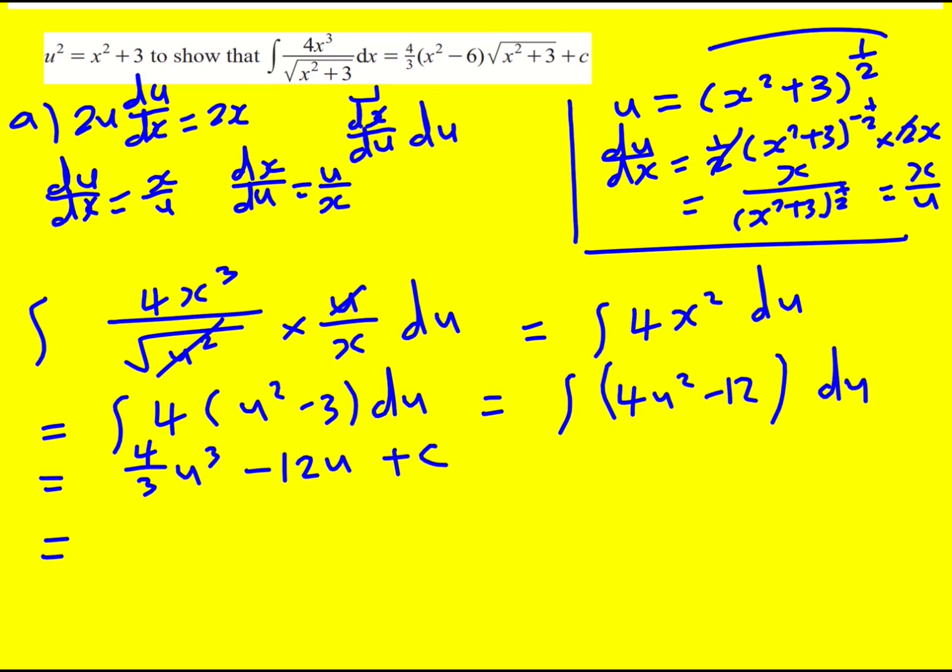So let's get it back in terms of x. Well, actually, this now comes in useful. So if I hadn't already done this, this is a good time to write down that u is equal to that. So it's going to be 4 over 3. And then it's going to be x squared plus 3 to the half to the 3. So that's just 3 over 2 here. Minus 12 x squared plus 3 to the half plus c. We can see in the final answer they factorized out the square root. So that's exactly what I'm going to do. Actually, they factorized out 4 over 3 of the square root.